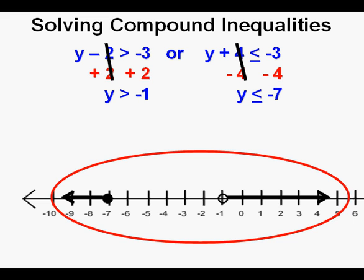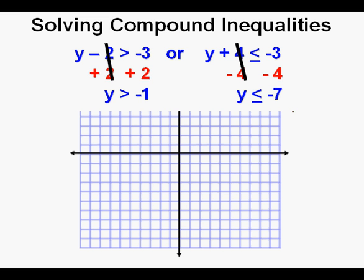This compound inequality can also be graphed on a coordinate plane. For this boundary line, we draw a dashed line at y = -1. It's a dashed line because it's not equal to but greater than negative 1. And since it's greater than, we have to shade upward because greater than means up or higher than.